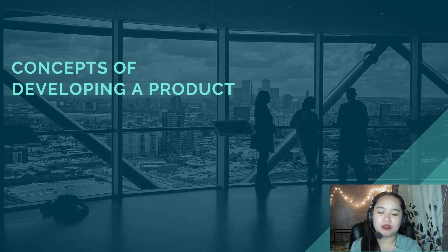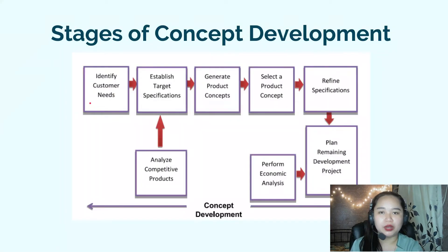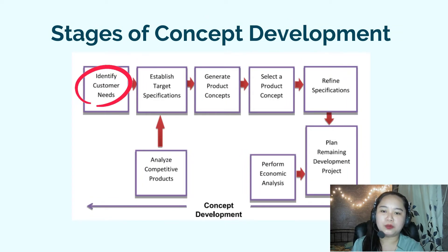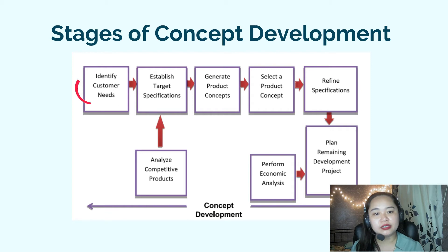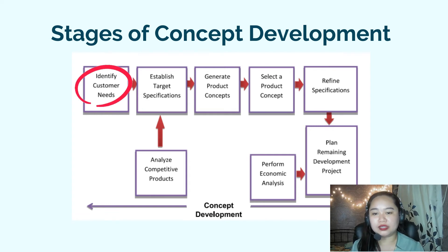Please look at the figure showing the stages of concept development. Number one — the first phase — is to identify customer needs. You can identify the needs of your customers by providing survey forms, conducting interviews, researches, focus group discussions, and observations. Through these methods, you can more easily identify the needs and wants of your customers and gather product specifications such as performance, taste, size, color, shape, and lifespan of the product.